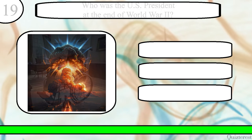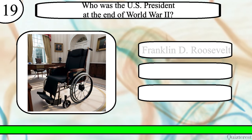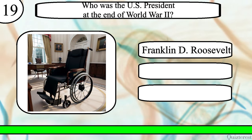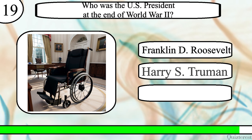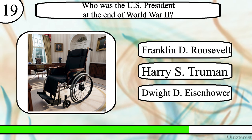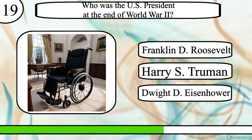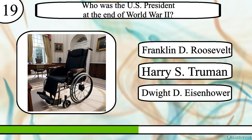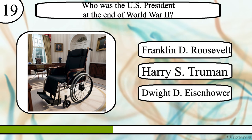Question 19. Who was the U.S. President at the end of World War II? Franklin D. Roosevelt, Harry S. Truman, or Dwight D. Eisenhower?